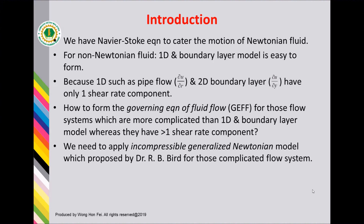As we all know, we already have Navier-Stokes equations to capture the motions of Newtonian fluid. For non-Newtonian fluid, the one-dimensional and boundary layer model is easy to form the governing fluid flow equations, because one-dimensional flow such as pipe flow and two-dimensional boundary layer have only one shear rate component. Then, how to form the governing equations of fluid flow for those flow systems which are more complicated than one-dimensional and boundary layer models, because they have more than one shear rate component? So we need to apply the incompressible Generalized Newtonian model, proposed by Dr. R. B. Bird, for those complicated flow systems.